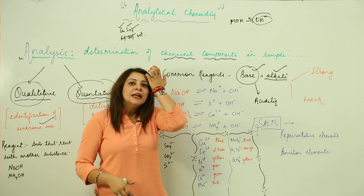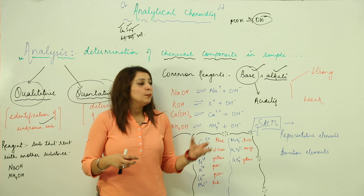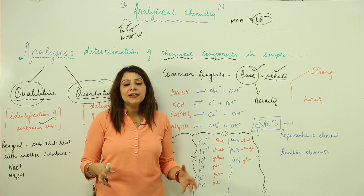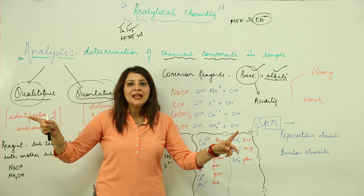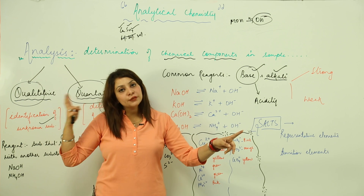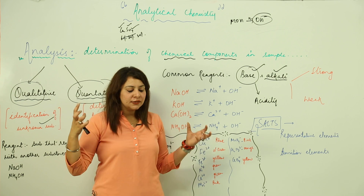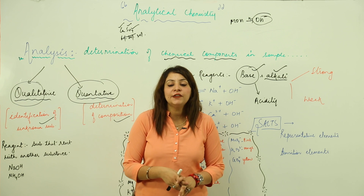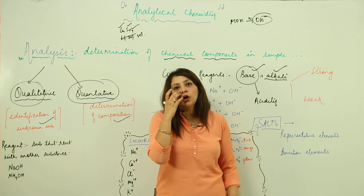If a base has the ability to donate one hydroxide ion, it is said to be monoacidic. If it has the ability to give two hydroxide ions, it is said to be diacidic. It depends upon the number of hydroxide ions one molecule can release. Focusing on how many hydroxide ions they give, we classify bases as monoacidic, diacidic, triacidic, or polyacidic.